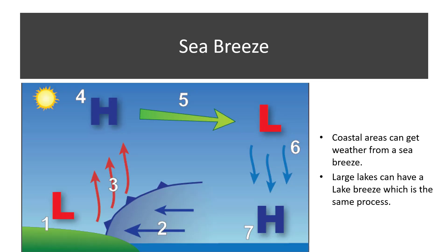Coastal areas can get weather from a sea breeze. On a sunny day, the land heats up faster than the water, creating a localized area of low pressure, labeled 1. Relatively cool air moves inland from the sea, since air moves from high pressure to low pressure, number 2. Then the cool wind forces the warm air to rise, at number 3.